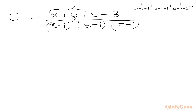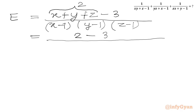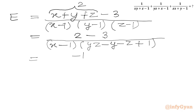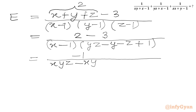Now this value is known: x plus y plus z equals 2. So in the numerator we write 2 minus 3. Now we multiply out the denominator brackets, keeping x minus 1 as is and multiplying y minus 1 with z minus 1 to get yz minus y minus z plus 1. So E becomes negative 1 over x times yz minus xy minus zx plus x, and then multiplying by minus 1 gives minus yz plus y plus z minus 1.